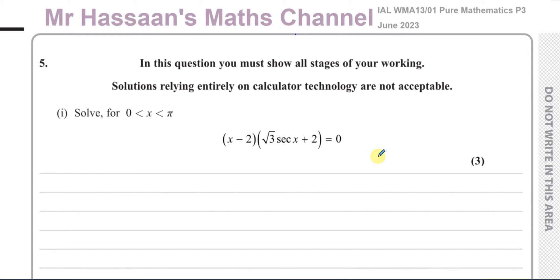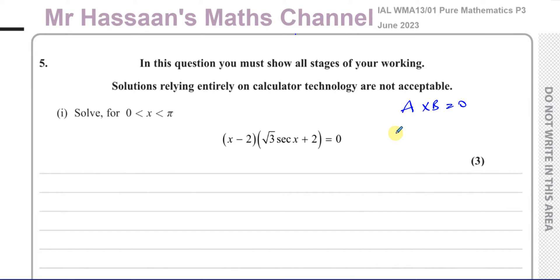Some students would start this by trying to expand the brackets. But we should give more thought to this, because we have a product of two factors which equals zero. When you have a product of numbers which gives zero, then we know for sure either one of them must be zero or the other one must be zero.